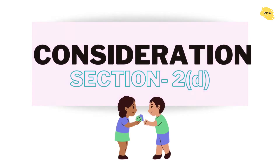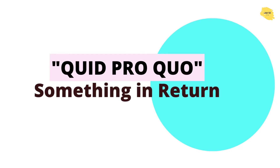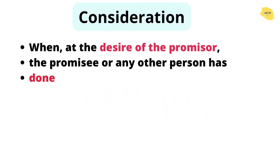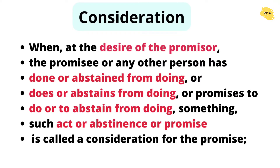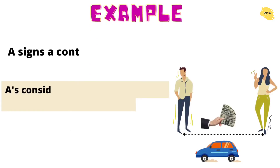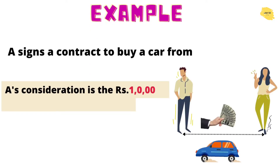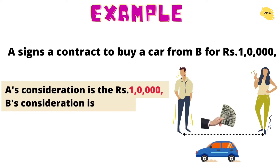Next comes Section 2(d): consideration. Consideration means quid pro quo — something in return. The definition in the bare act is quite large, but the simple meaning is this: A signs a contract to buy a car from B for one lakh rupees. Here, the one lakh rupees and the car are the consideration for each other, because one person is giving the car, so in return they need money. This is consideration.